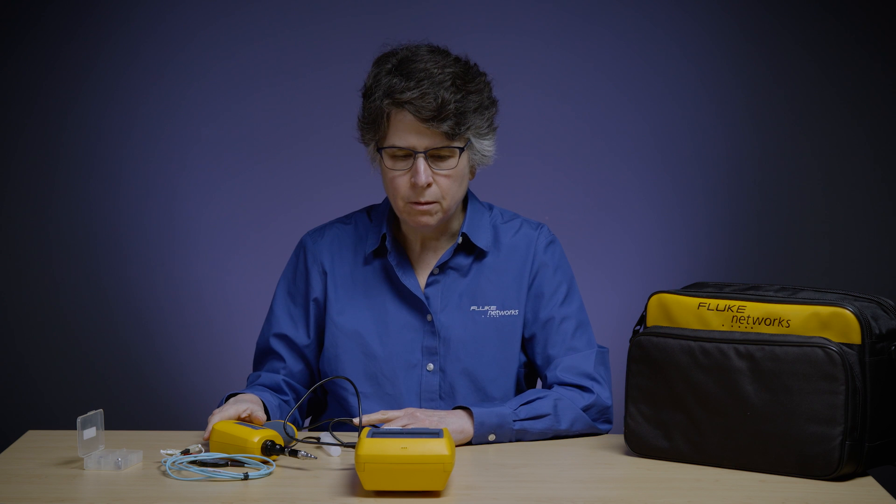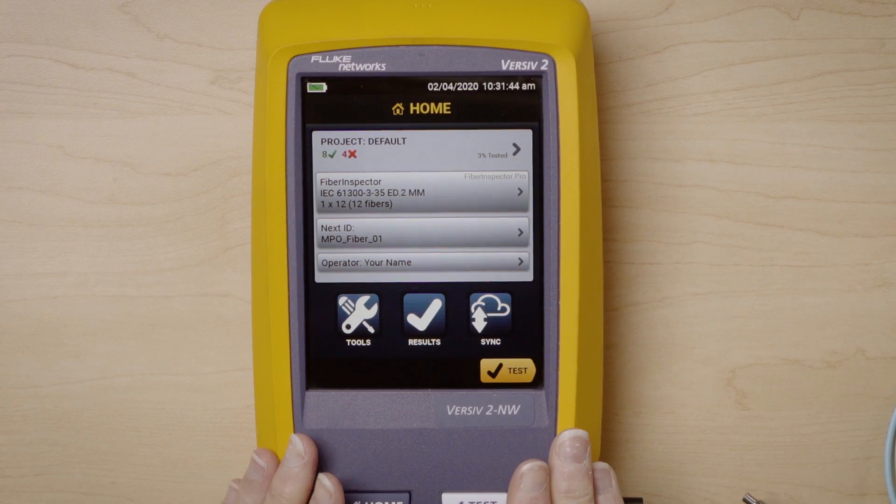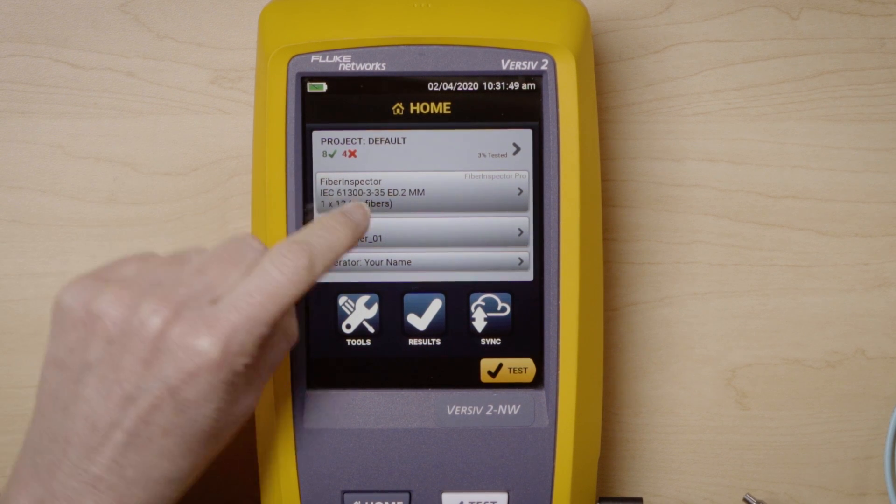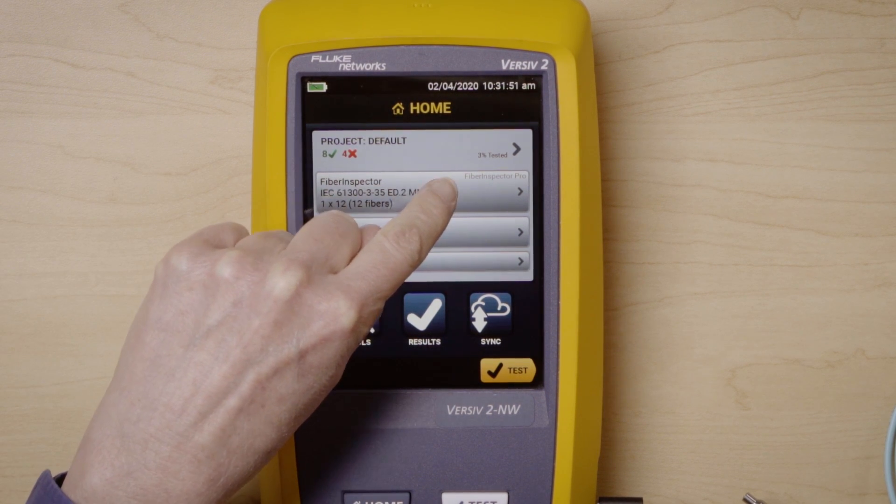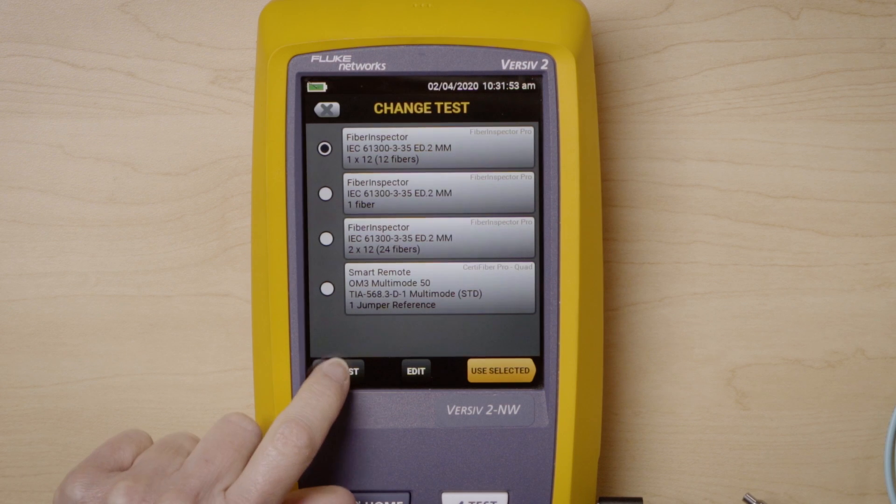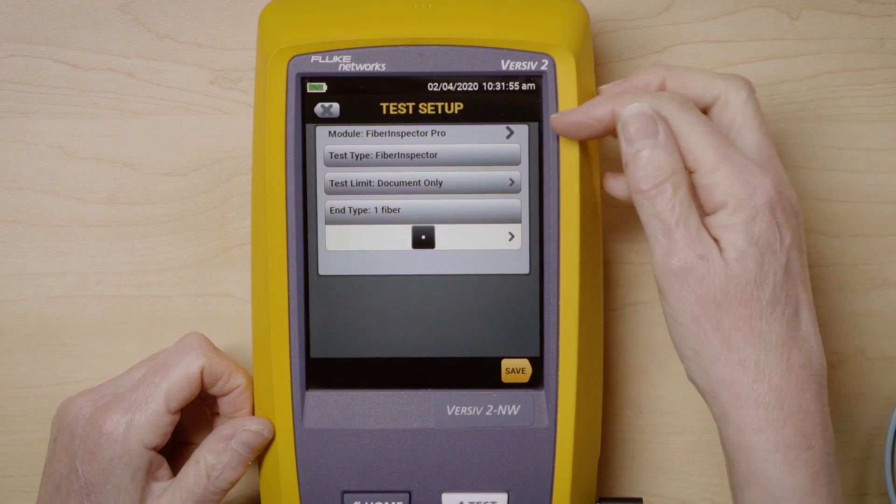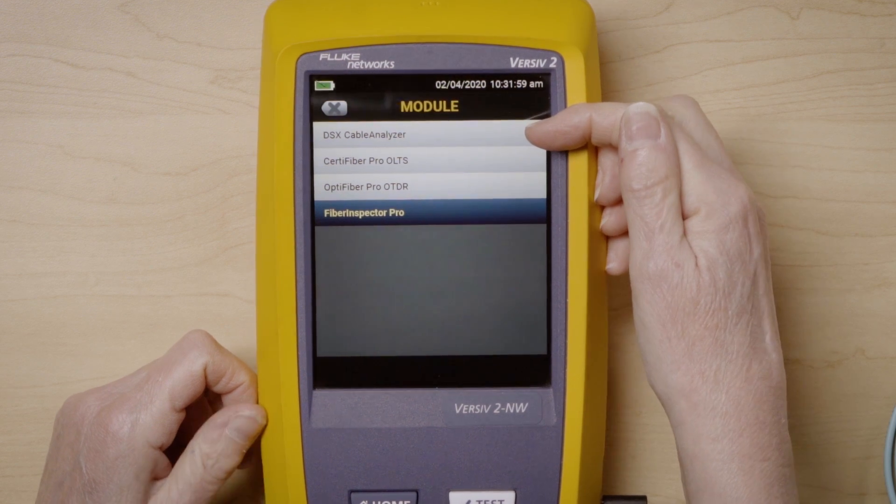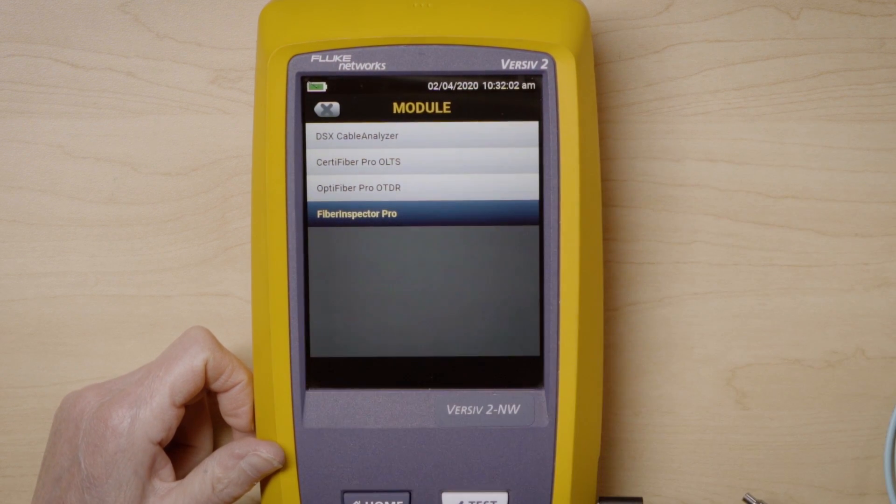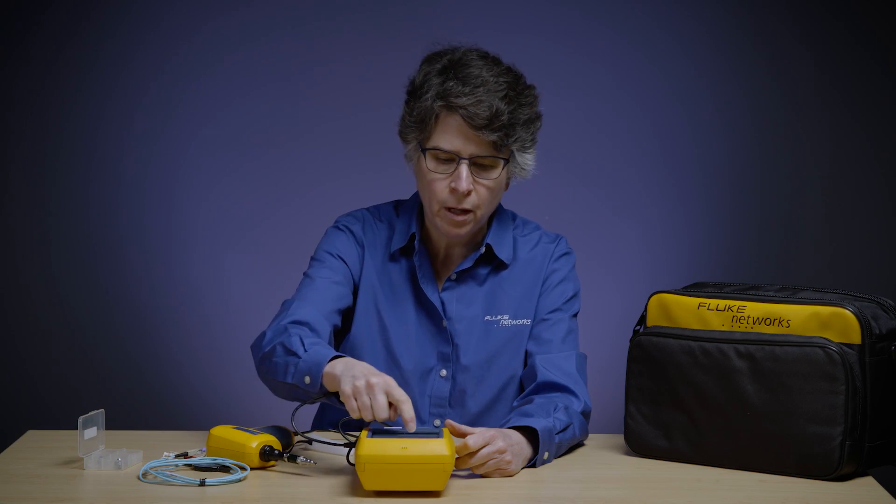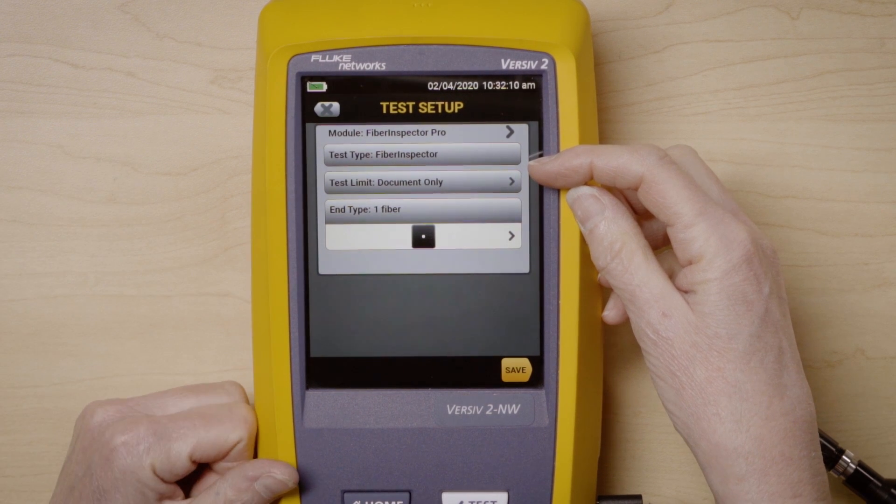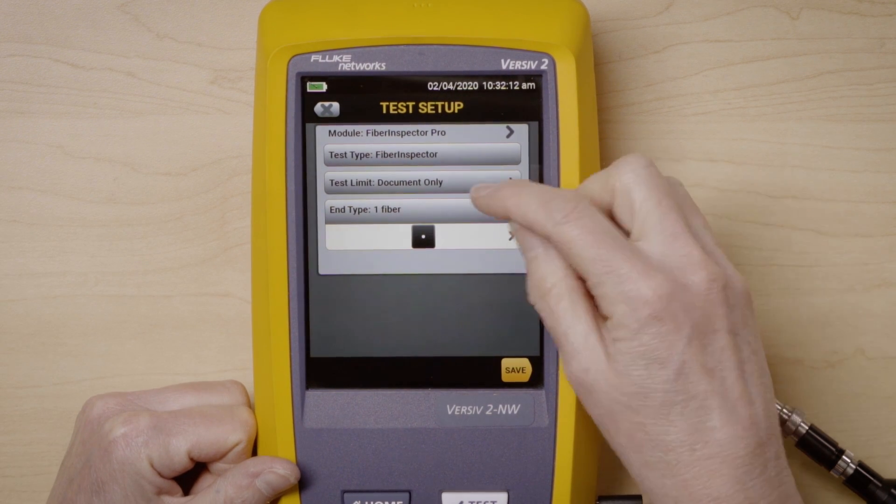The next thing I need to do now is actually set up my Versive unit itself. So I'm going to do that by clicking on test mode and saying new test. And it comes up with what type of module. I can choose from my DSX cable analyzer, CertiFiber Pro, OptiFiber Pro, or the Fiber Inspector Pro. Since this is a fiber inspector, I'm going to go ahead and choose that. It tells me what type of test type. We're going to do fiber inspection.